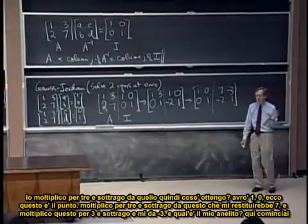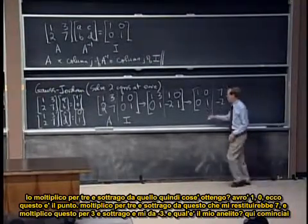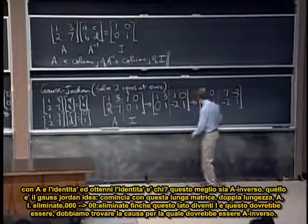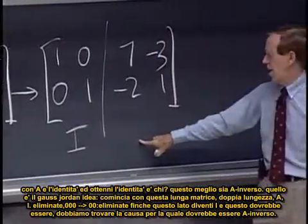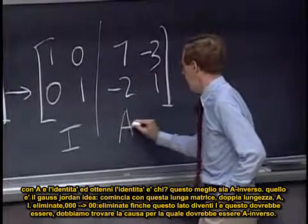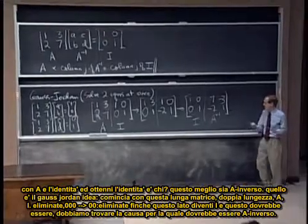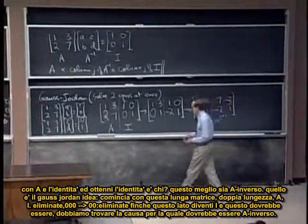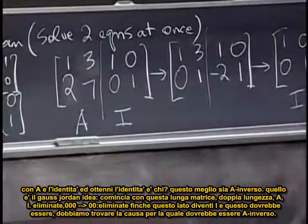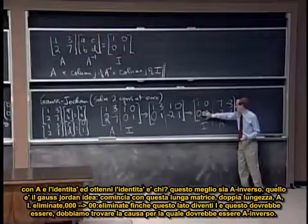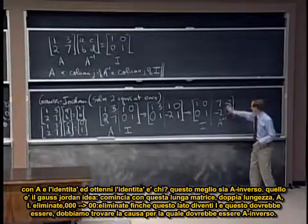And what's my hope, belief? Here, I started with A and the identity and I ended up with the identity and who? That better be A inverse. That's the Gauss-Jordan idea. Start with this long matrix, double length, A I. Eliminate, eliminate, until this part is down to I. Then this one will, must be, for some reason, and we've got to find the reason, must be A inverse.